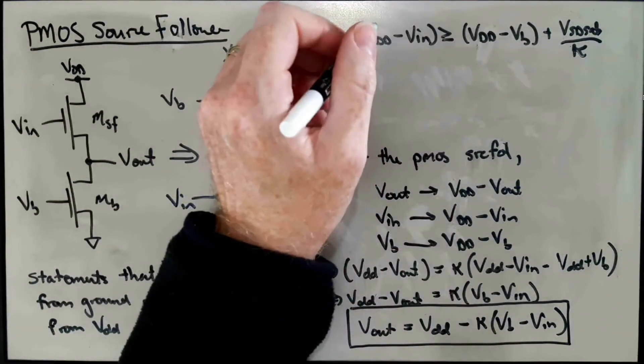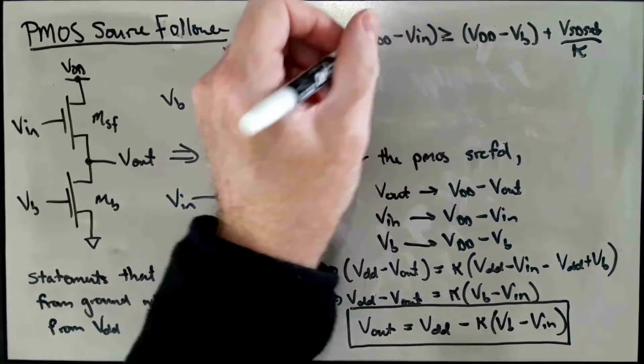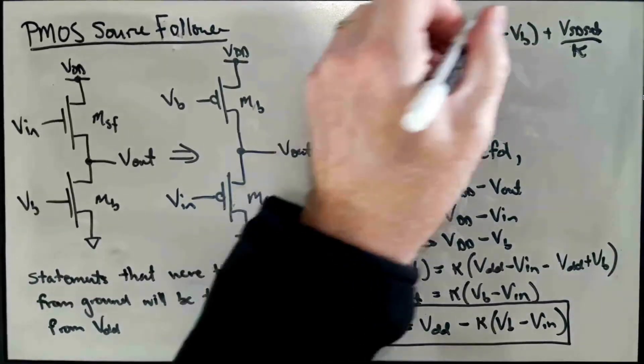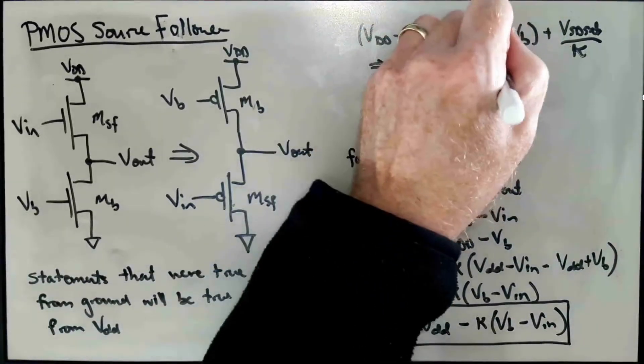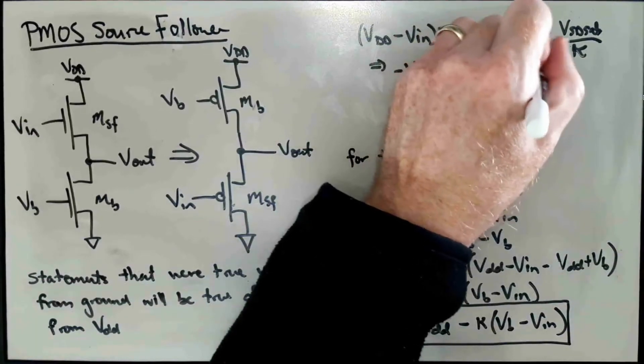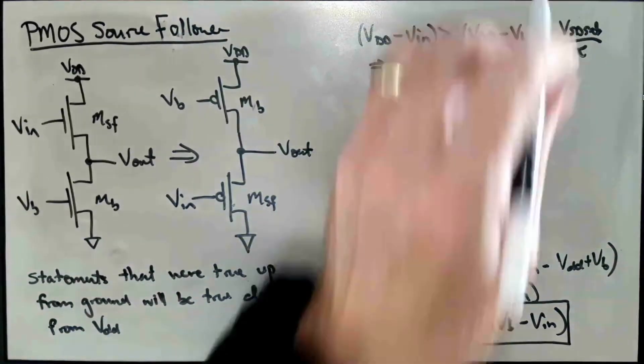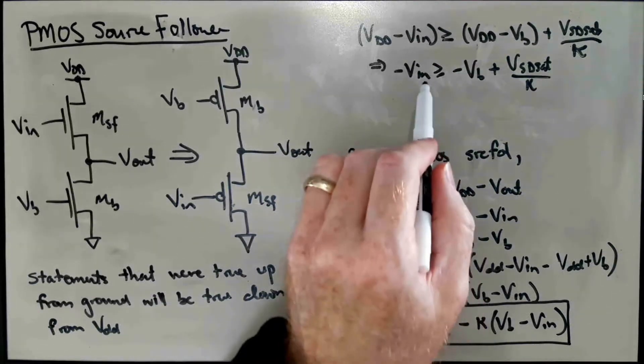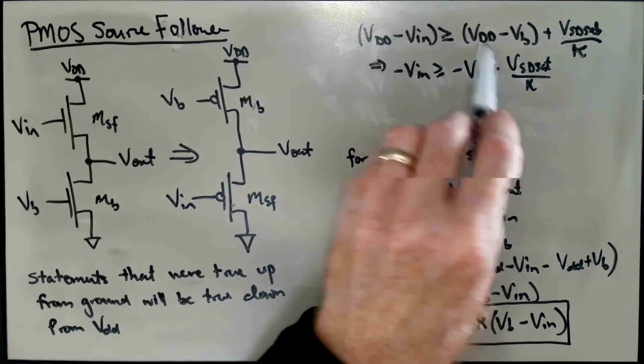And so the particular one that causes, or there's a boundary for saturation, we could call the VSDsat. So I'm just going to do that. But here we can subtract a VDD from both sides, which implies that minus VIN has to be greater than or equal to minus VB plus VSDsat over Kappa. And now we'd like to get rid of this minus sign here, and we can do that by multiplying both sides by minus one. But when we do this, we have to remember that the sense of the inequality has to flip when we multiply both sides by a negative number.